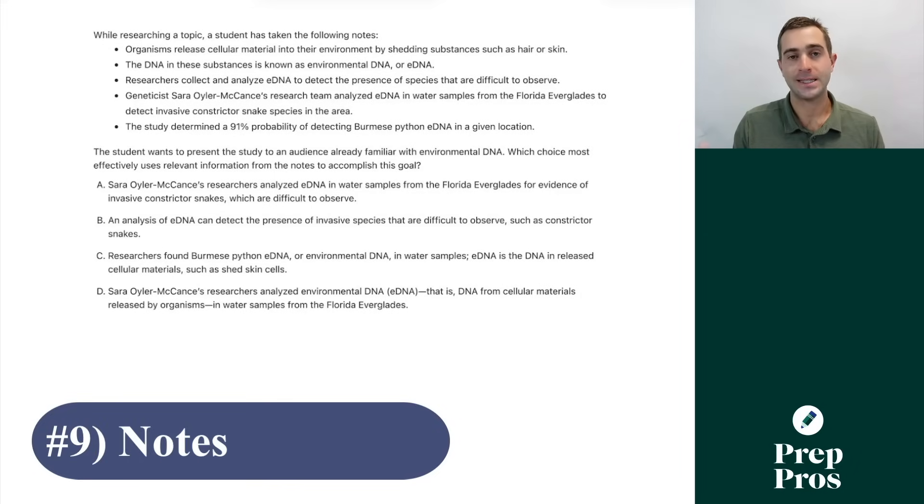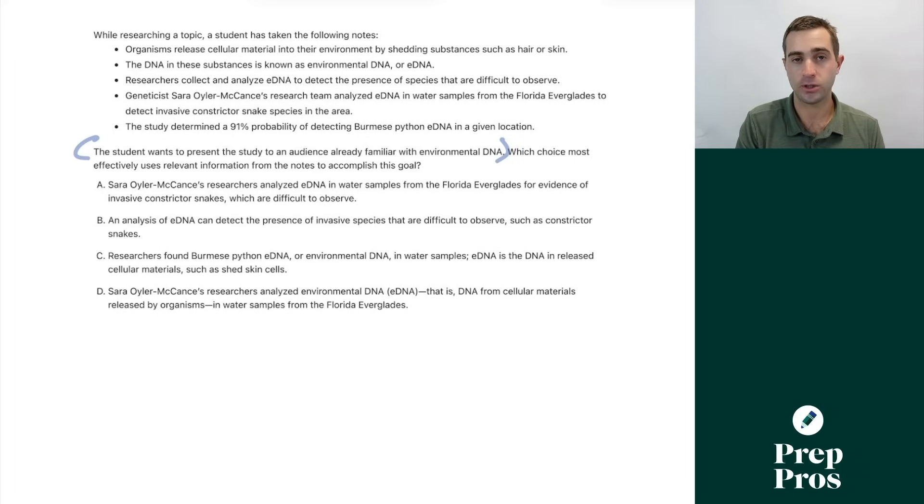The next thing you're going to see on your SAT are notes questions. There's six different varieties of these. But one variety that gives a lot of students trouble and shows up more in the second difficult module is questions like this. The student wants to present the study to an audience already familiar with environmental DNA. What we want to do is present the study. But since it's an audience that's already familiar with environmental DNA, we don't want to be giving background information on environmental DNA because the audience is familiar with it.